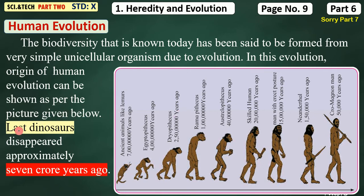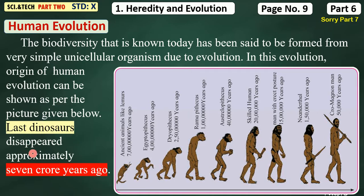The last dinosaurs which were found in the world disappeared approximately 7 crore years ago. You have to make a chart for easy reference, because there are a few important years that you need to understand. The last dinosaurs disappeared and died from this world 7 crore years ago.